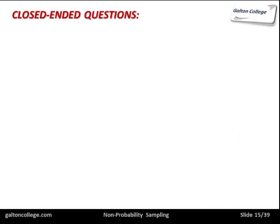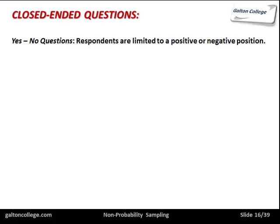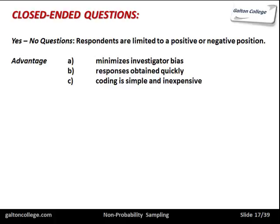Closed-ended, or closed questions — these are yes or no questions. Respondents are limited to positive or negative: do you agree or do you not agree, with nothing in between. These minimize investigator bias — you simply pose the question and it's yes or no. The responses are obtained quickly and the coding is very easily done. It's very easy to analyze how many agreed or disagreed.